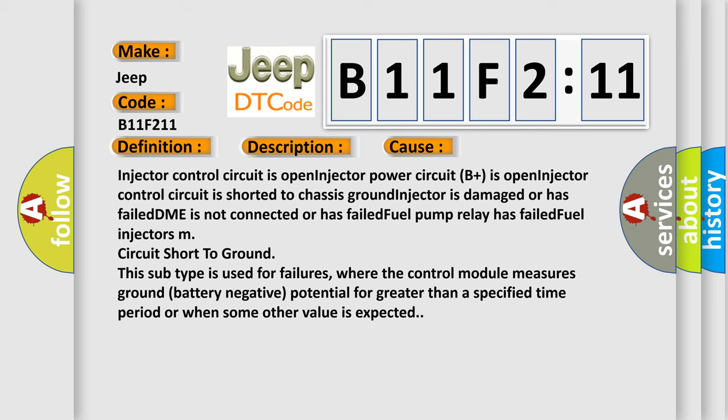This subtype is used for failures where the control module measures ground battery negative potential for greater than a specified time period or when some other value is expected.